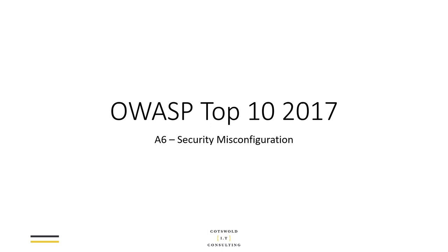Welcome back to the OWASP Top 10 for 2017. In A6 we are going to look at security misconfiguration, which is a very broad category covering various things that need setting up correctly in applications, but particularly on web servers, web server software, and a number of other areas. I'm going to give you some examples of what good security configuration looks like and some examples of where we can get this wrong.